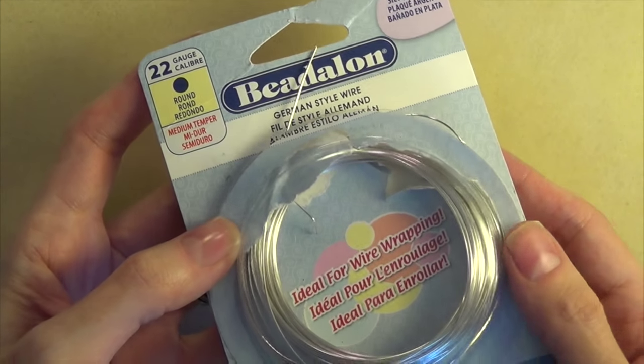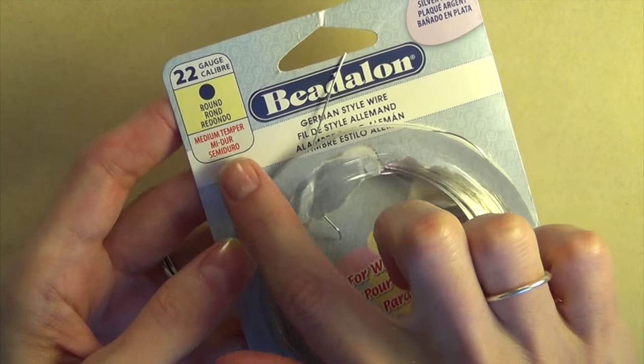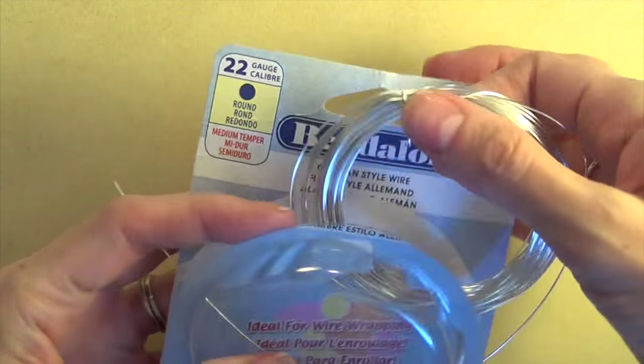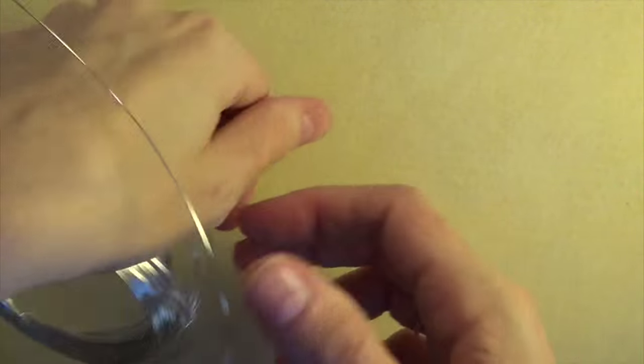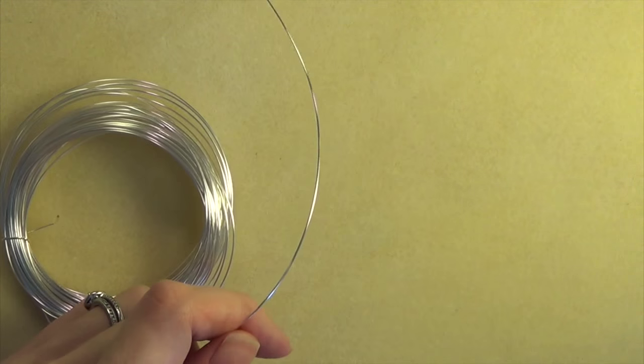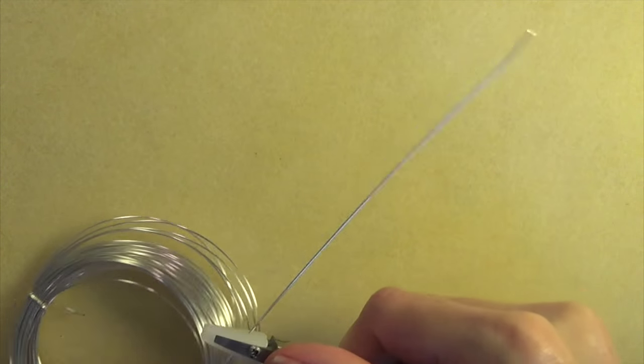For the base spokes you want to use a half hard or medium temper wire. I recommend this 22 gauge german style wire. It's a good size and it's the right temper. You don't want to use artistic wire or craft wire because it's going to be too soft and bend out of shape.